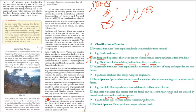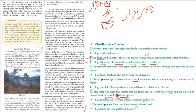Extinct Species are those that no longer exist on Earth — they have already gone. Examples include the Asiatic cheetah and the pink-headed duck.